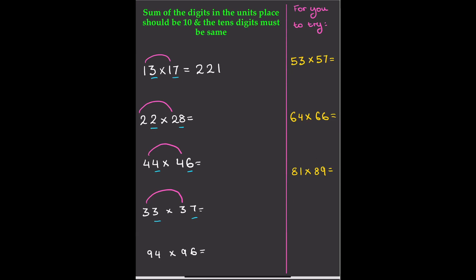I'm going to show you how to work these out. Let's start with 13×17. First, we multiply the units digits: 3×7 = 21. Then we multiply the tens digit by its next highest number — 1 times 2 — so we get 2.